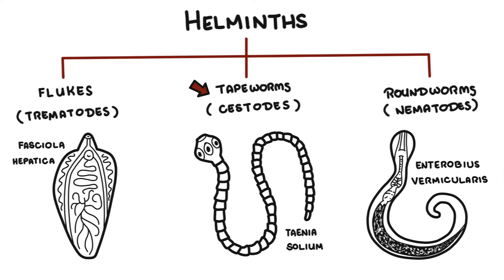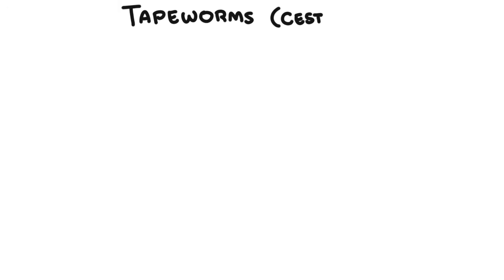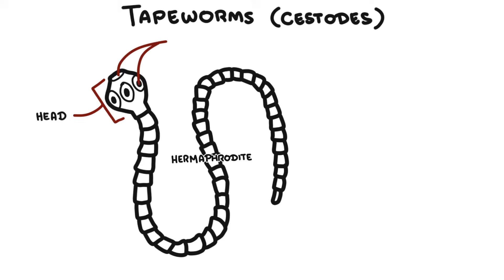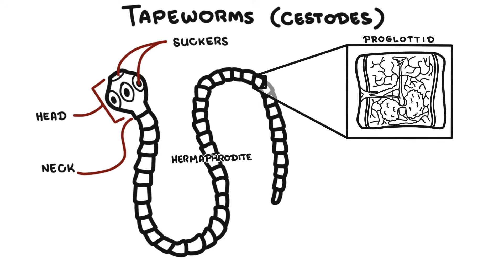The next type of helminths are the tapeworms, also known as the cestodes. Tapeworms are another type of flatworm. Adult tapeworms are elongated, segmented flatworms and are also hermaphrodites. The head has one or more hooked suckers for firm attachment to the host. Behind the head is the neck, which is the growing region. The body consists of segments called proglottids, each containing both male and female reproductive organs. Tapeworms have no digestive system — no mouth, no anus — and digested food from the host is absorbed through the body wall.